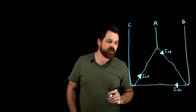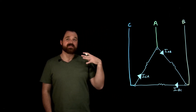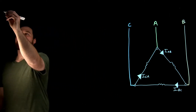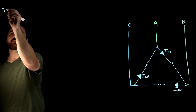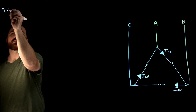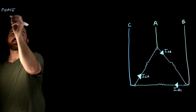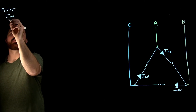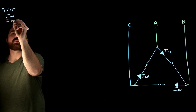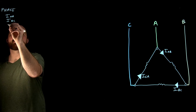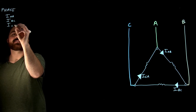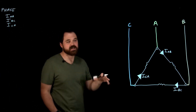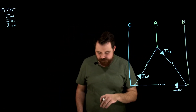What we also have here is line currents. My phase currents would be I_AB, I_BC, and I_CA. Those are based off of the phase, and my voltage is there.